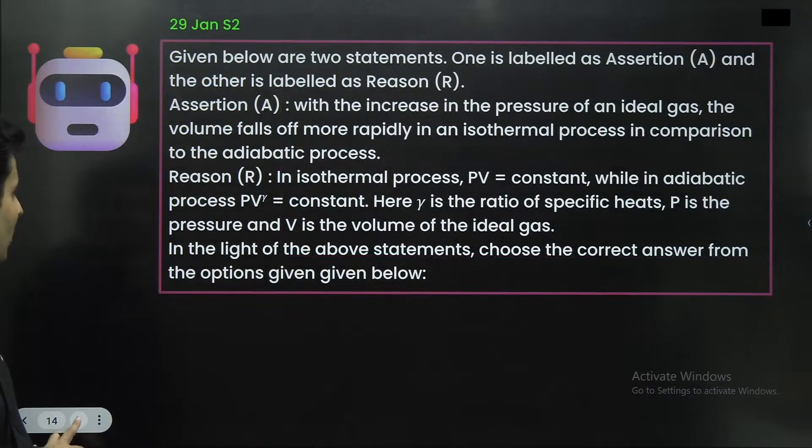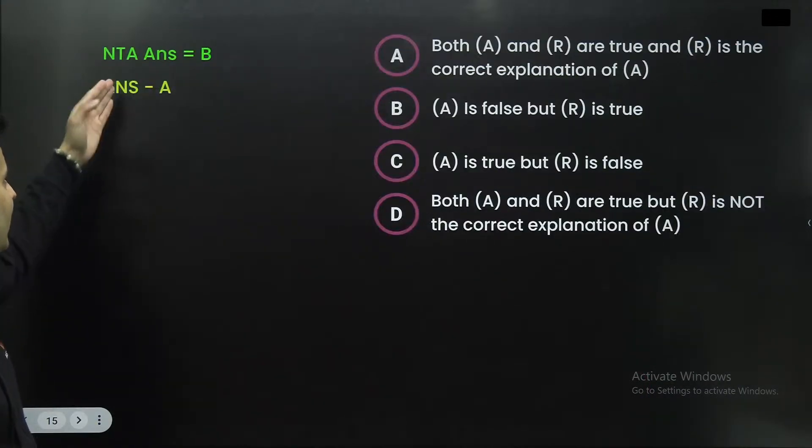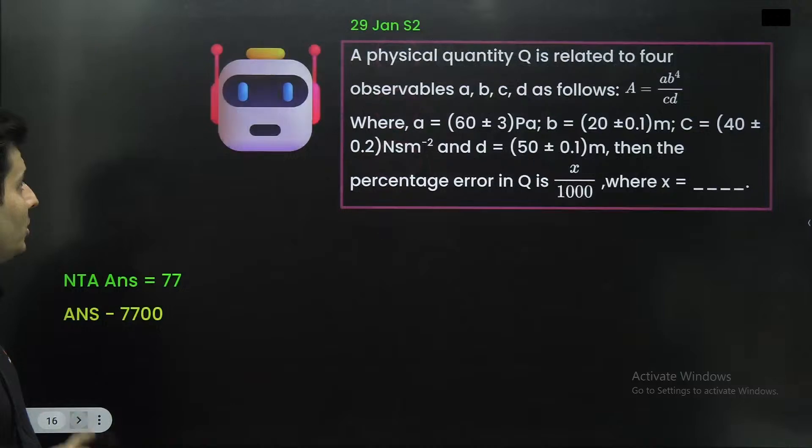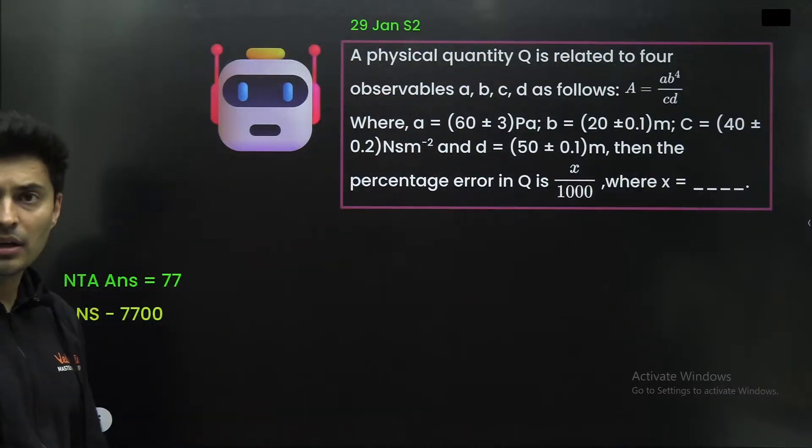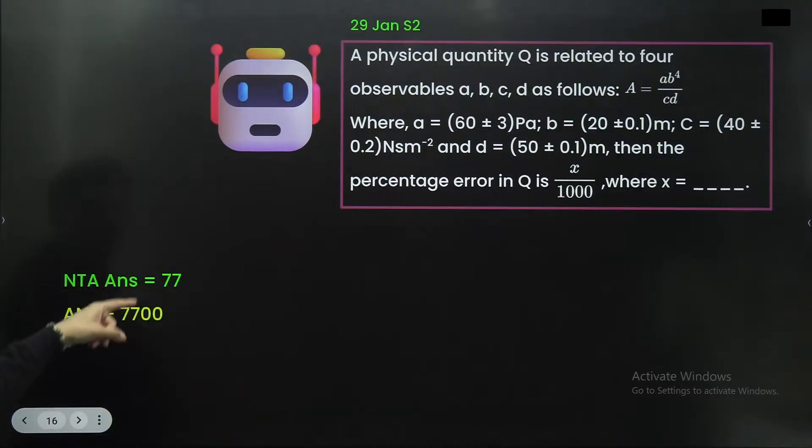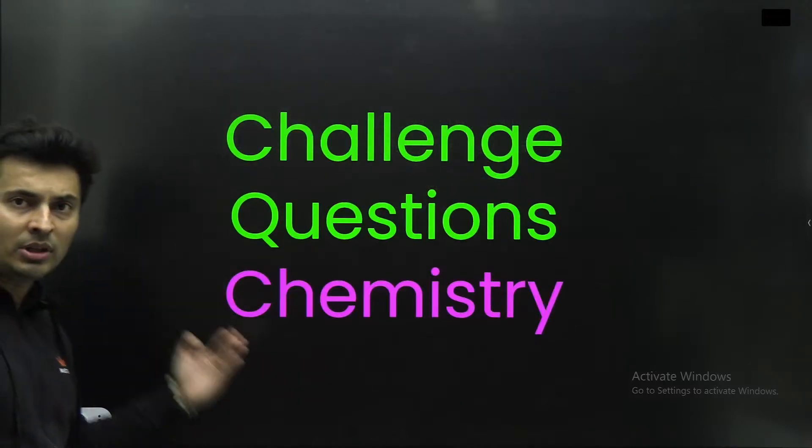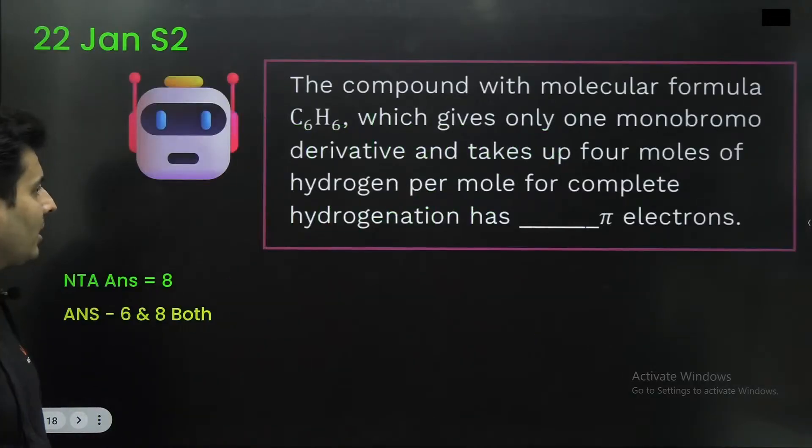Then this particular question on critical angle in physics. Then another question on statement based, where NTA answer is B, whereas the correct answer should be A. Then this particular question, again, on dimensions. NTA's answer and our answer is completely different. Some of the questions in chemistry, which are, well...